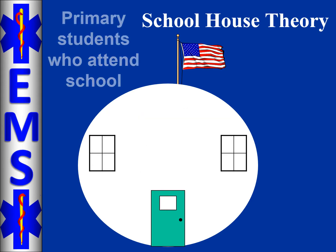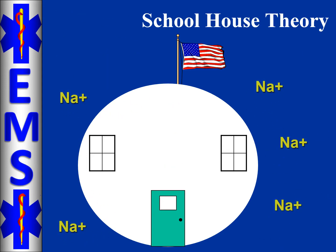We have three students that come to our school: sodium, potassium, and calcium. All three of these students are cations, which means they are positively charged ions. Sodium is the most important student because they are the facilitators of physiologic action — they love the fresh air and being outside, so that's where they spend their entire day. Potassium loves the predictability and control of being inside, and that's where they spend their entire day.